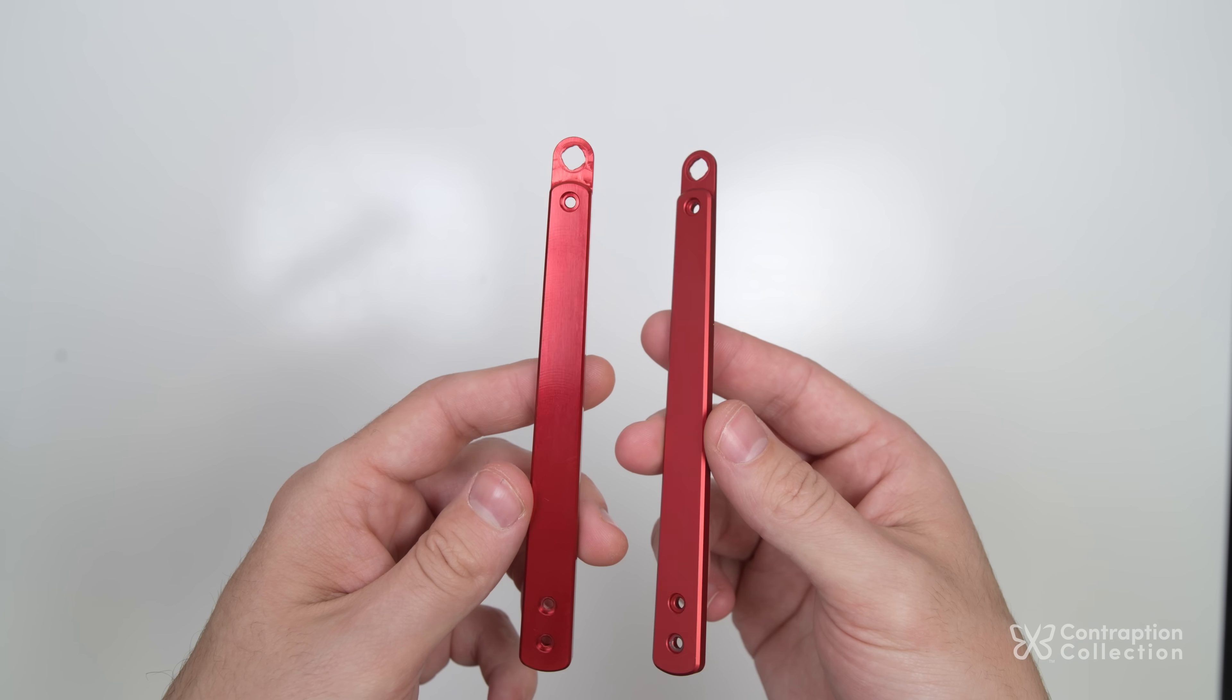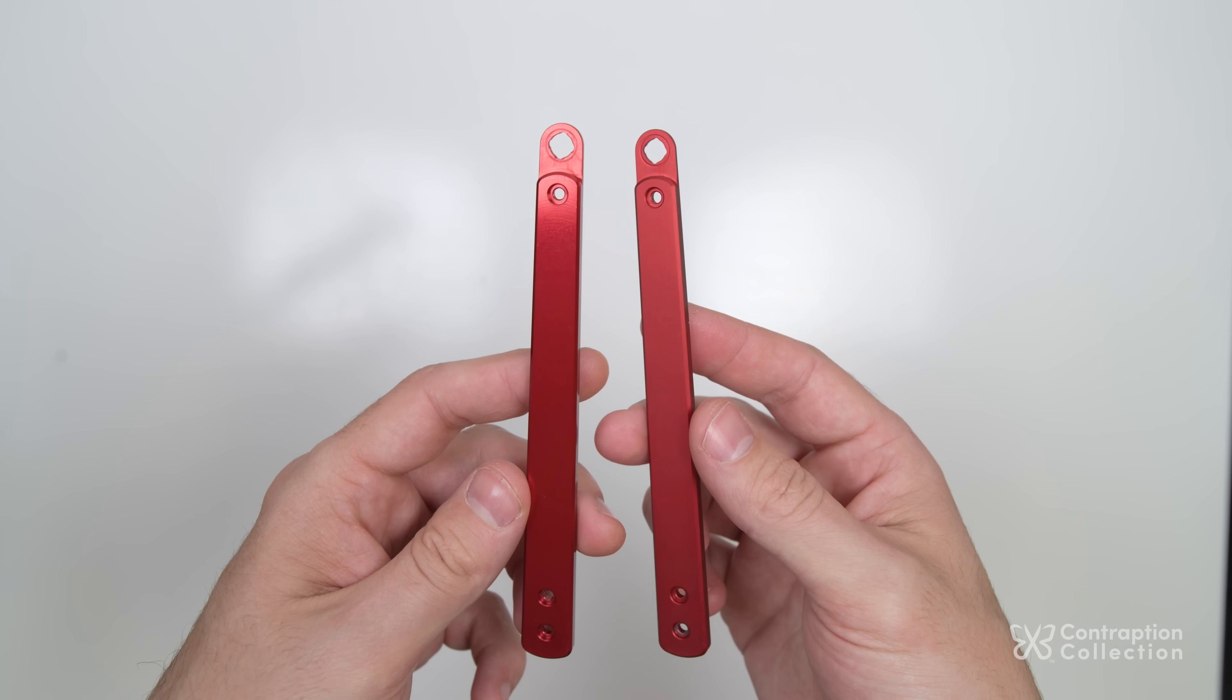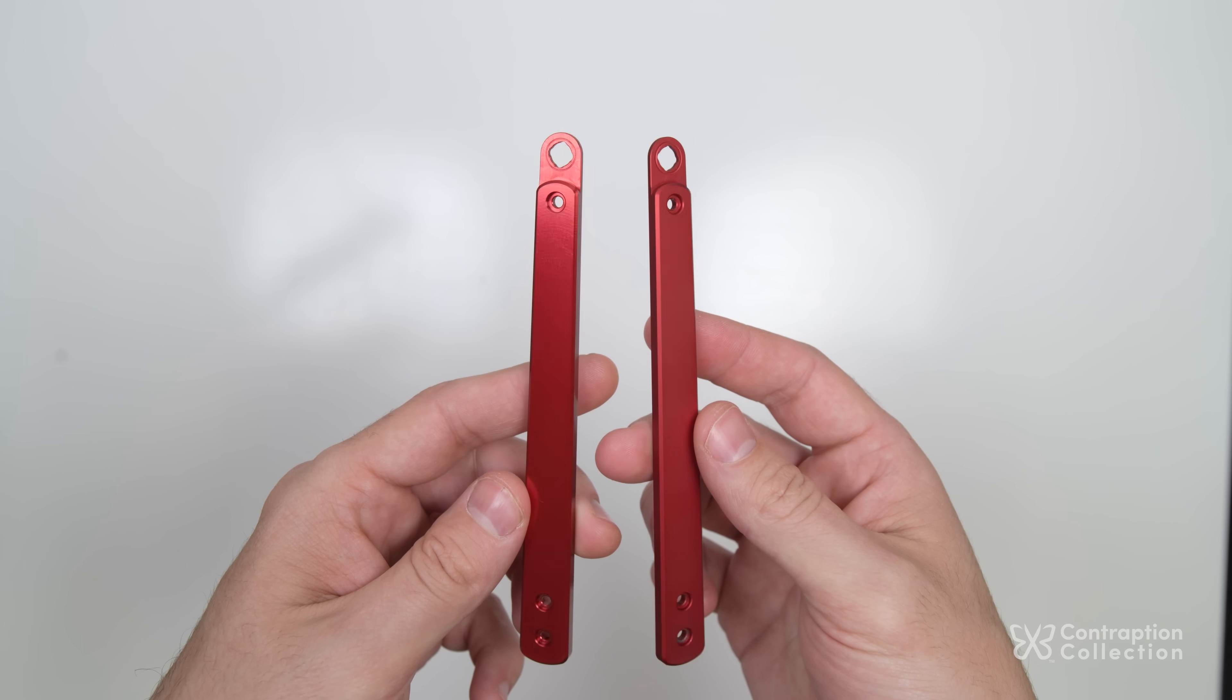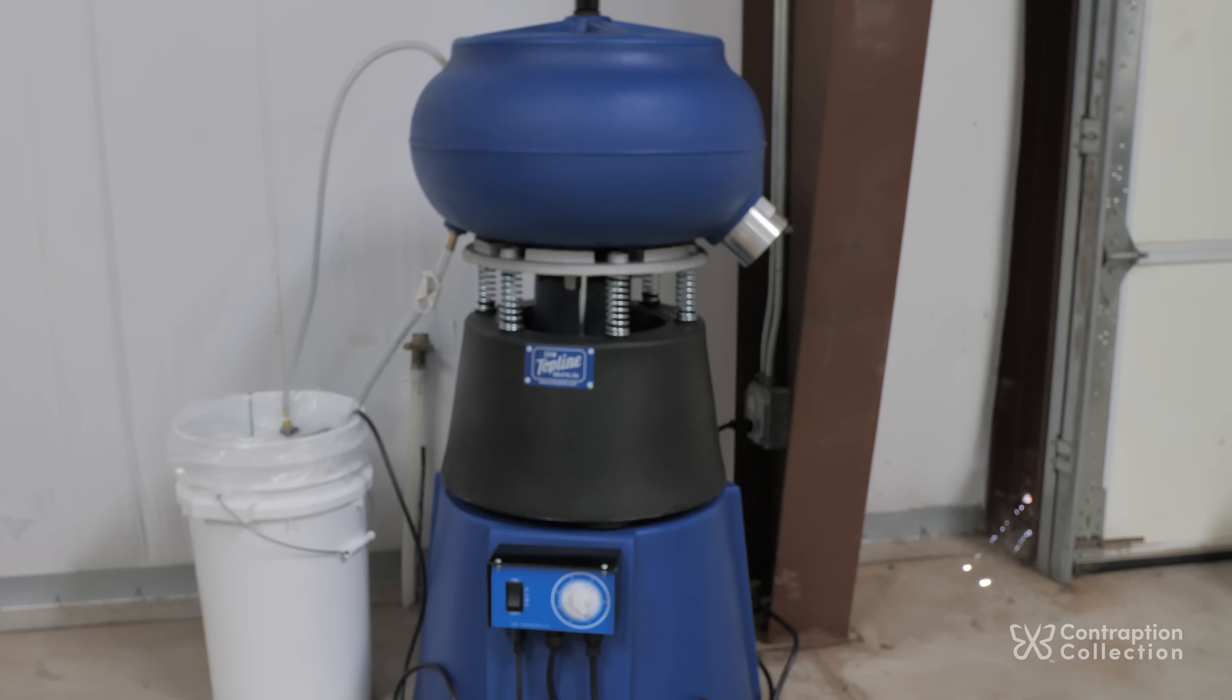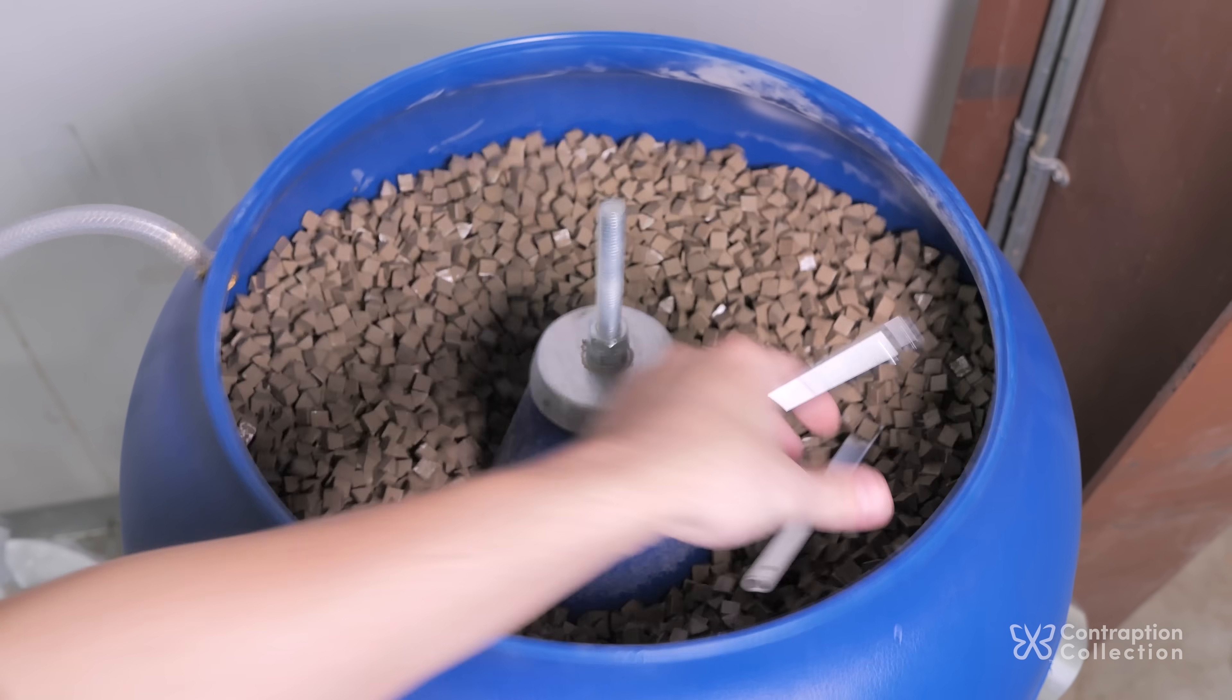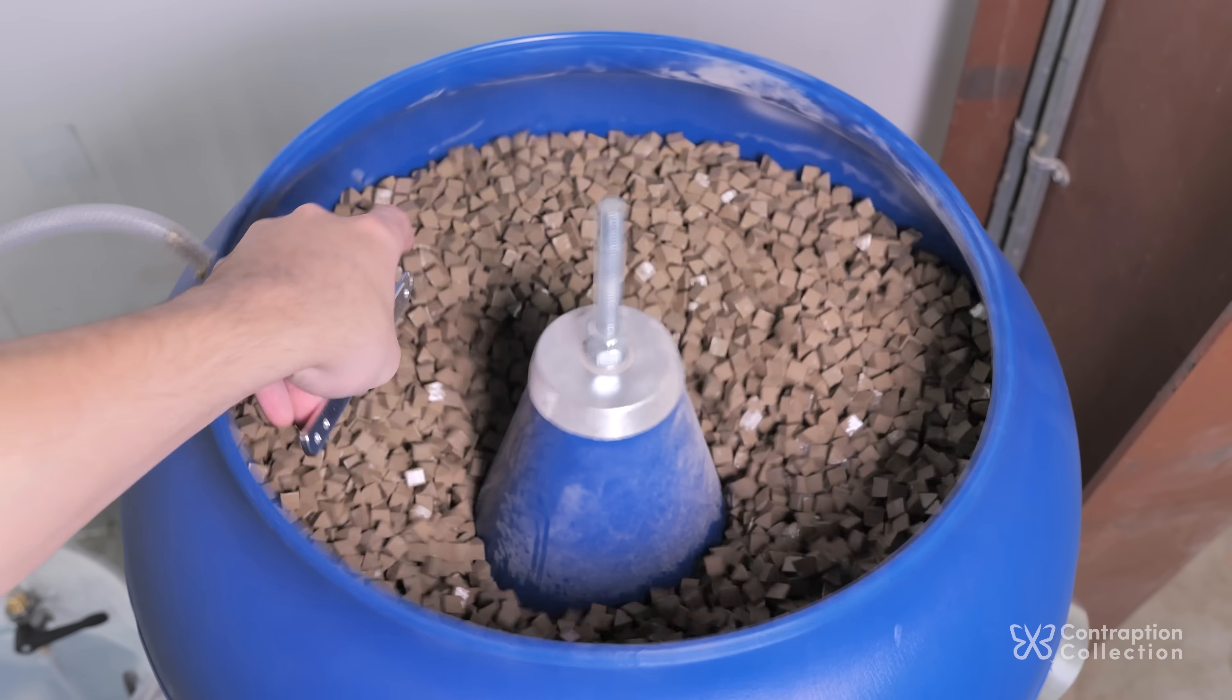He also said he could help me do an anodizing sample, so I sent him a few scrap handles. I had him bead blast one of the handles so I could see what different finishes look like. Both of these finishes are okay, but what I've been wanting to do for a long time is tumble parts. So I finally got a tumbler. They recommended I use these ceramic triangles for tumbling 7075 aluminum. They seem to work pretty well.